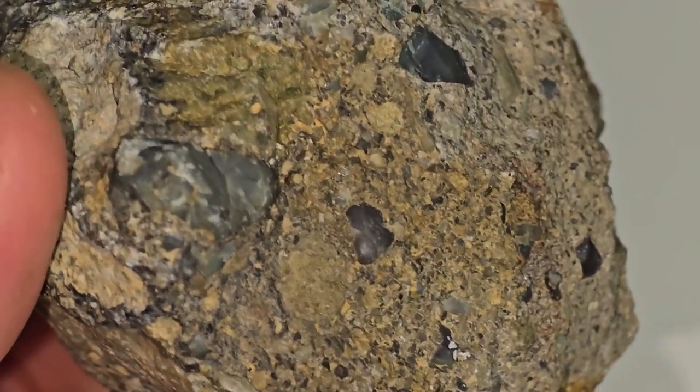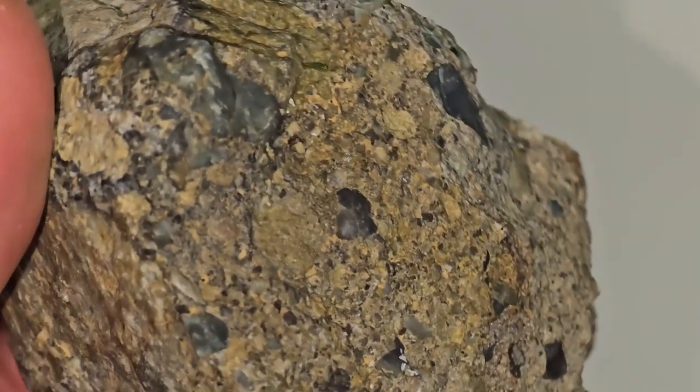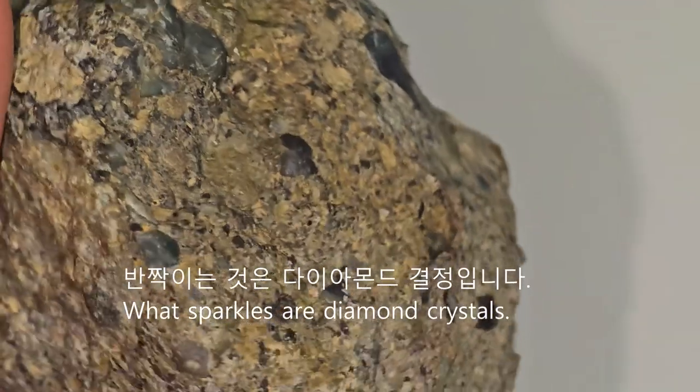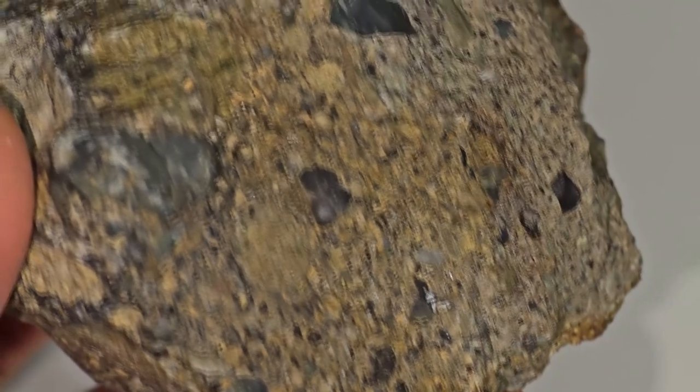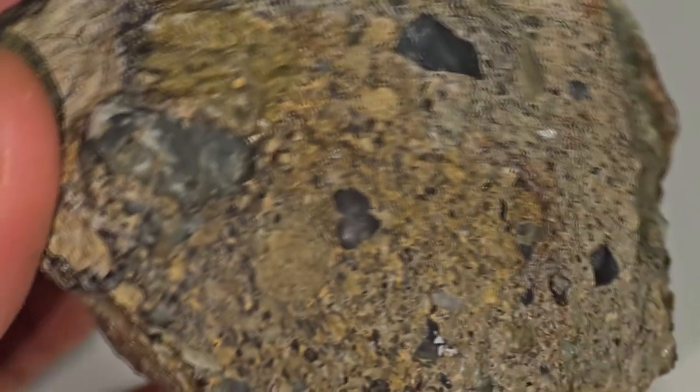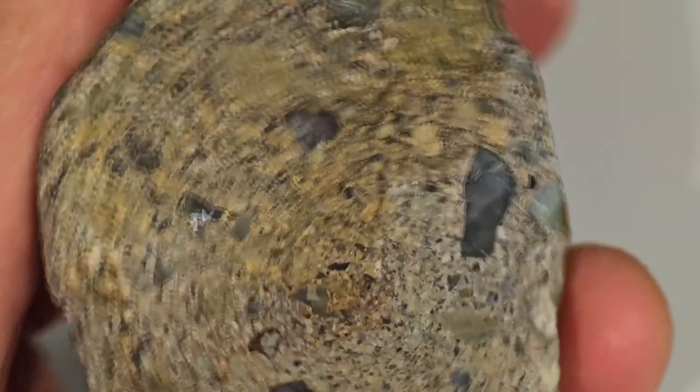Conventional diamonds are those found in kimberlite that rises from the mantle. Alternatively, polycrystalline diamonds are diamonds found in meteorites.